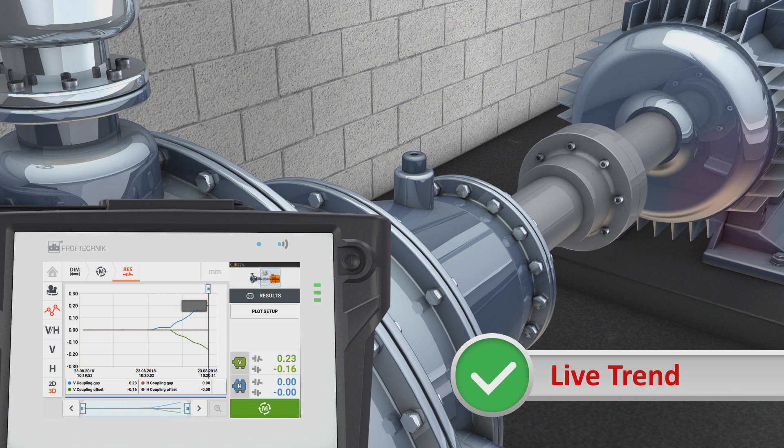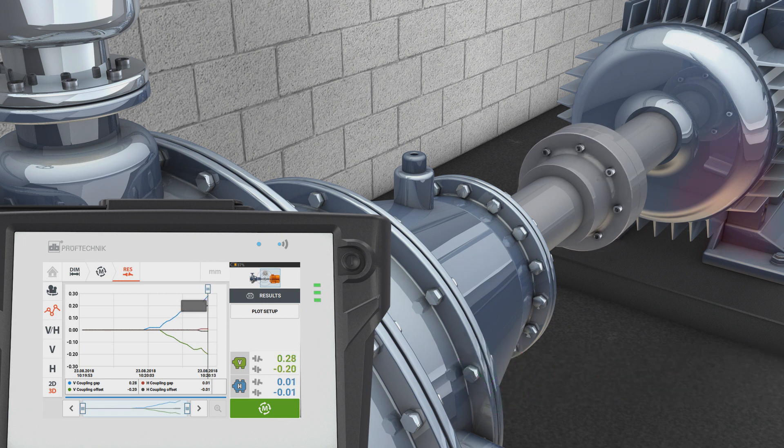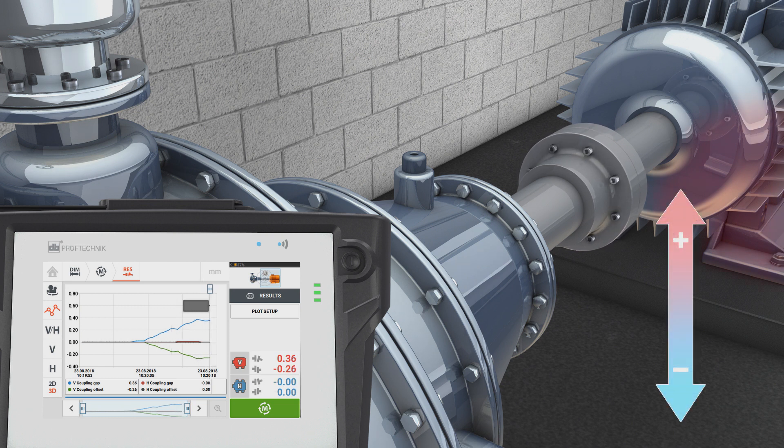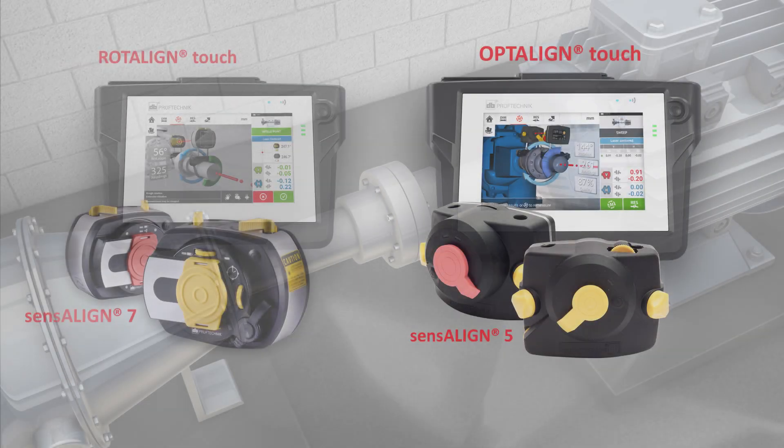Based on the X and Y split detection areas, the SensALIGN laser sensor technology is able to record the thermal growth of the machine while it is running up. The SensALIGN measurement technology is available with ROTALIGN touch and OPTALINE touch.